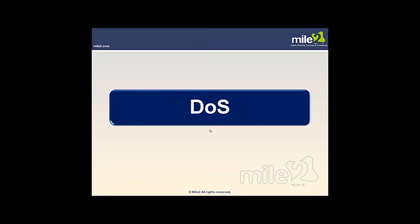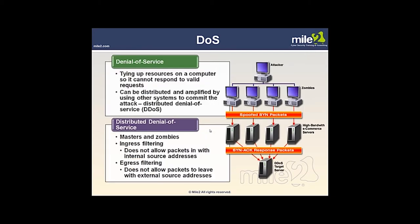Denial of service — DoS — really comes in two forms: denial of service and distributed denial of service. If one bad guy is attacking a system, we think of that as a denial of service. If many people are attacking a system, it's a distributed denial of service. In a DDoS, the attacker infects zombie machines, and those zombies drain the resources of the target system — many doing the attack simultaneously. When you employ many other machines, it's far more damaging than a single machine attacking.